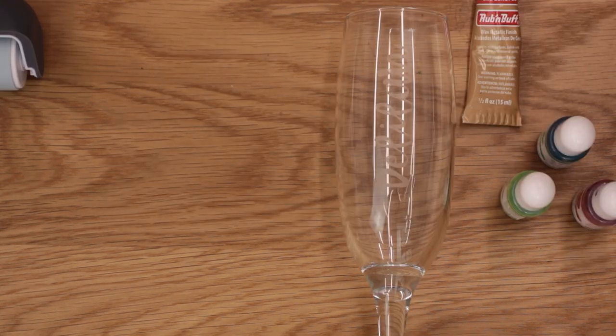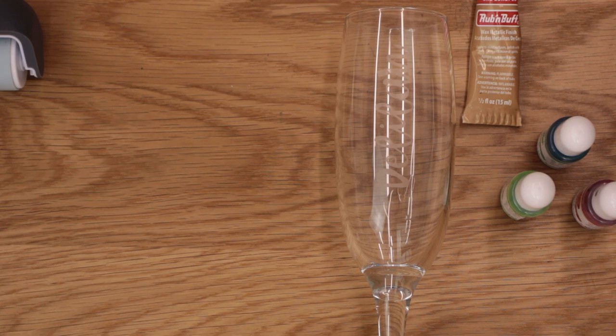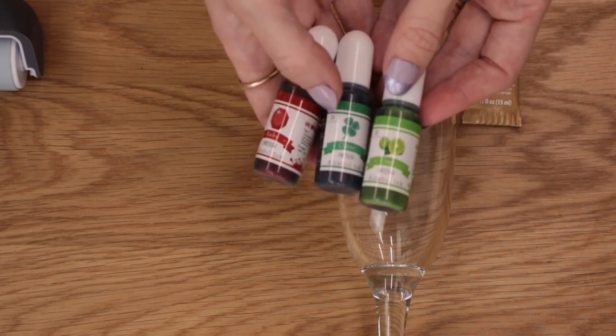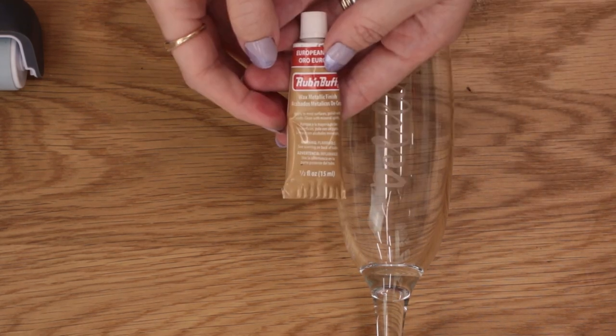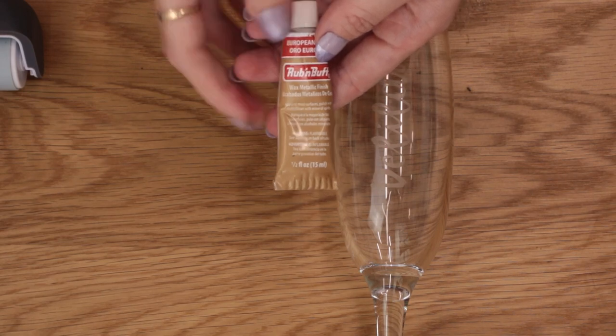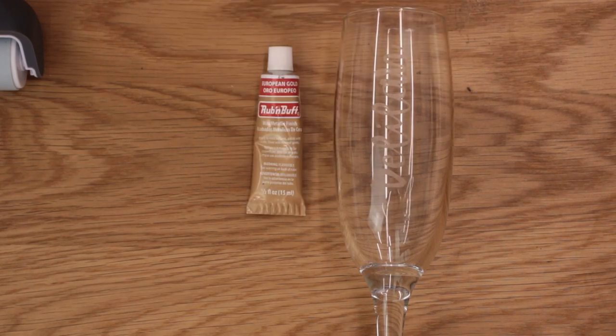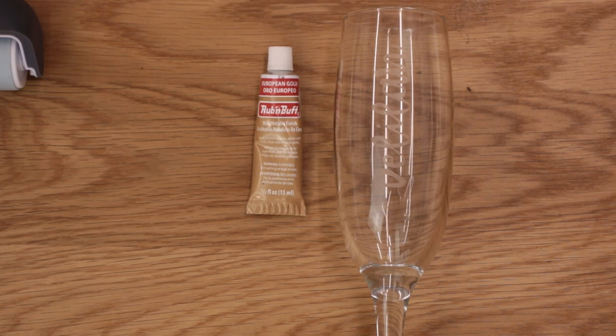So our glass has now been etched and there's two ways that you can color the etching on glass. The first way is to use alcohol inks. I've just got some cheap ones here that I got off Amazon and the other is to use a product called Rub and Buff. Metallic wax kind of paint and they come in quite a few different colors.